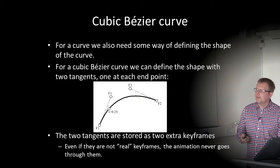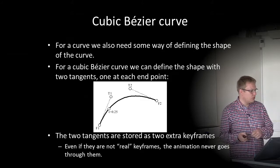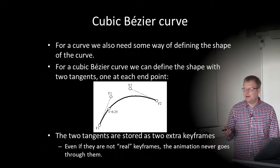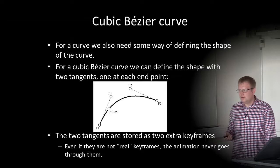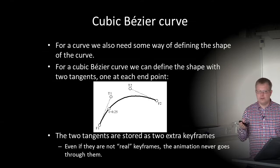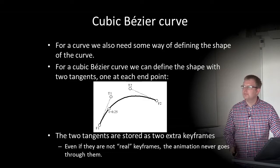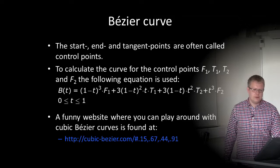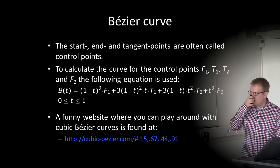For a curve, we need some way of defining its shape. For a cubic Bézier curve, we define the shape with two tangents — one at each end: tangent at point F1 and tangent at point F2. The two tangents are stored as two extra keyframes called control points. They aren't real keyframes — the animation never goes through them — but they define how the animation looks. To calculate the curve using control points F1, T1, T2, and F2, we use the Bézier curve equation with tangent points.